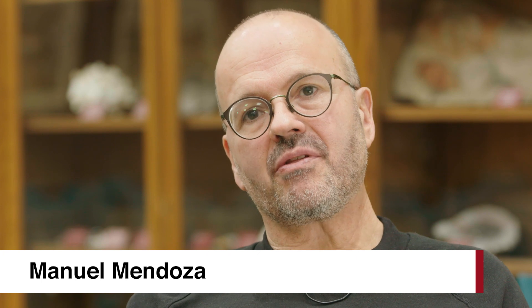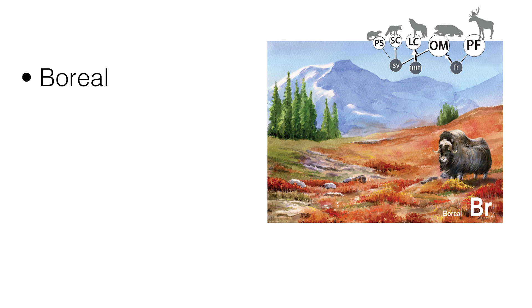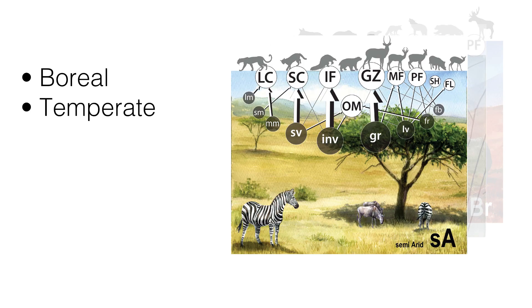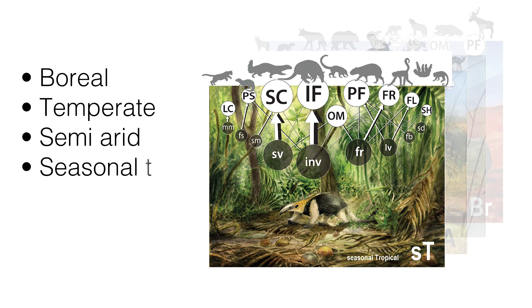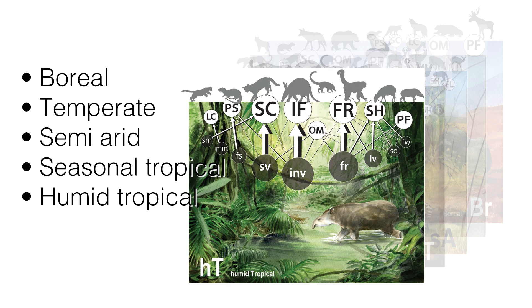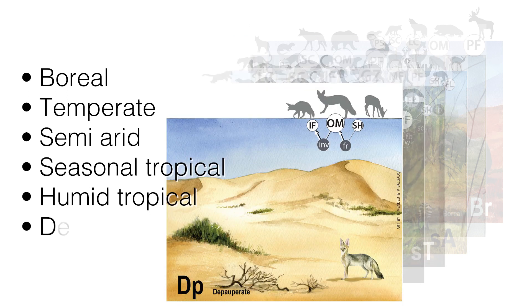We analyzed the feeding preferences of all terrestrial mammals with more than three kilograms of body mass, and we found that there are six basic types of trophic communities: boreal, temperate, semi-arid, seasonal tropical, humid tropical. The sixth type, the pauperate, is characterized by having a very low number of species. The most interesting thing is that these six ways of organizing energy are determined by climate.